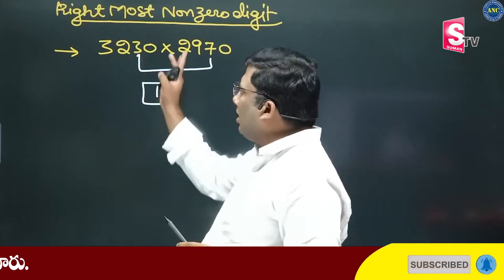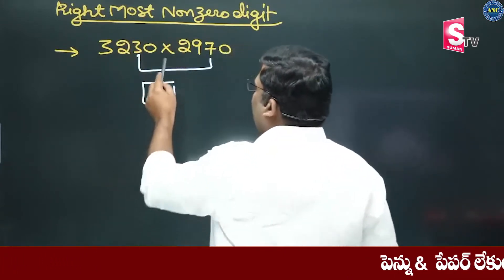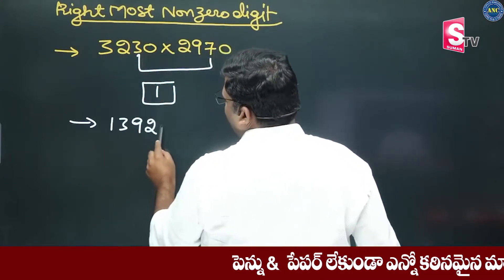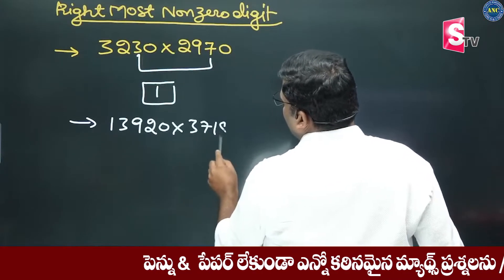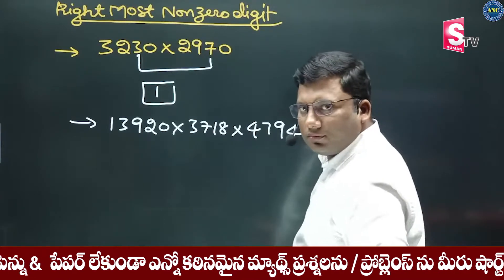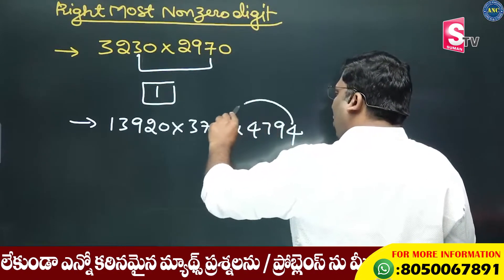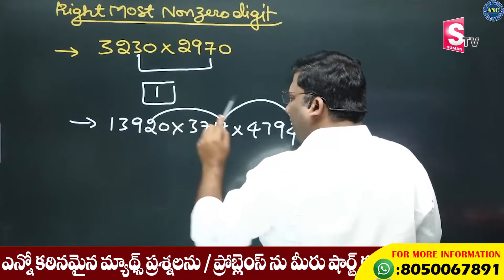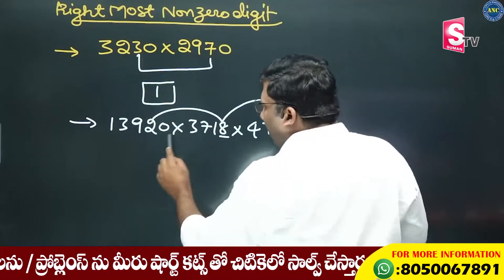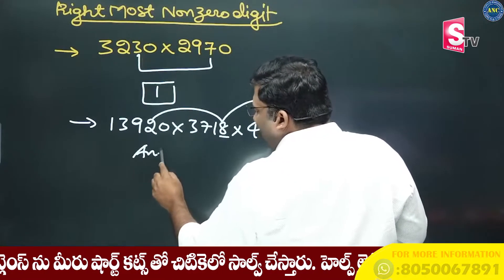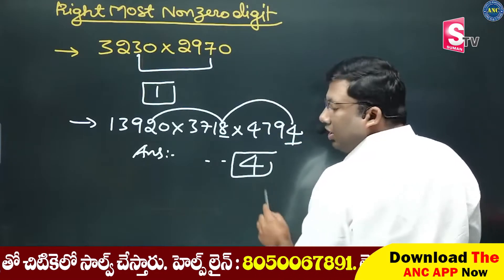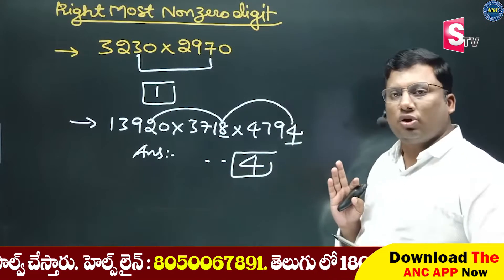Let's go to the next example to mark. The instruction command of 1: 13920 into 3718 into 4794. Here we have 4, here 80, here 2 — only focus on the units. 4 times 8 is 32, 2 times 2 is 4. The rightmost non-zero digit is 4.